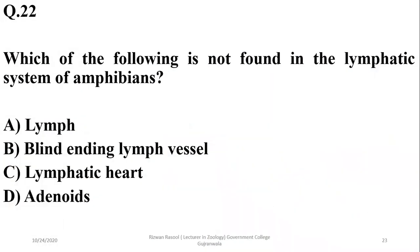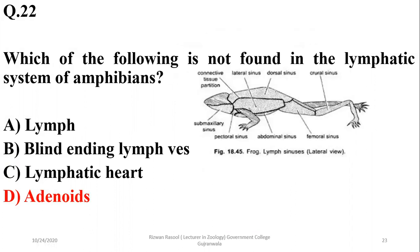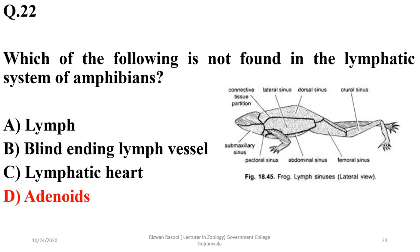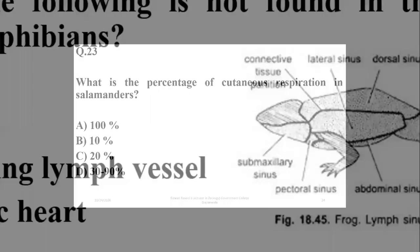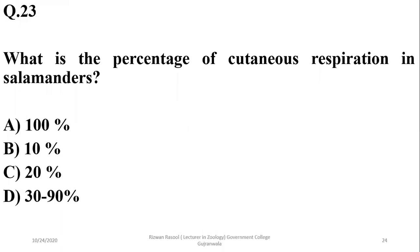Which of the following is not found in the lymphatic system of amphibians? The lymphatic system of amphibians does not include adenoids, but does include blind-ending lymph vessels and lymphatic hearts as structural features.